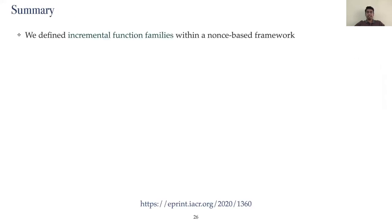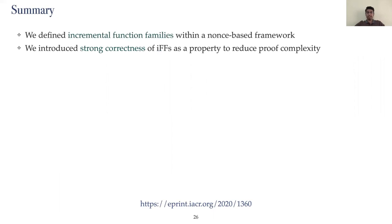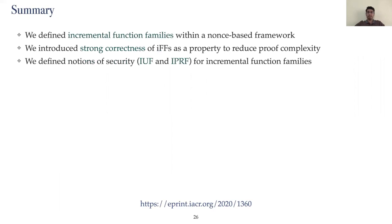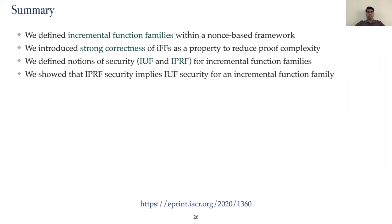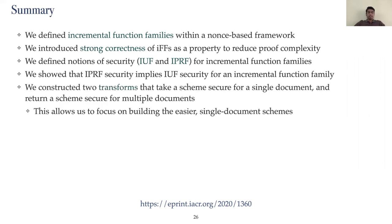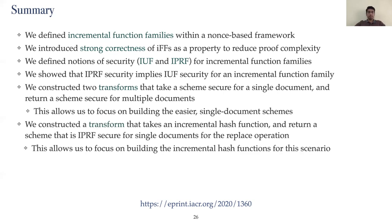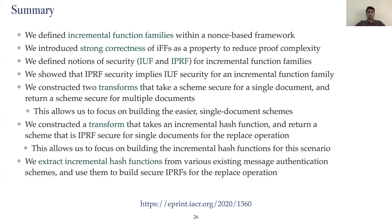To summarize: we define incremental function families within a nonce-based framework and introduce strong correctness as a property to reduce proof complexity. We define two notions of security — IPRF and IUF — for these incremental function families, and show that IPRF security implies IUF security. We construct two transforms going from single-document to multi-document security, and a transform that takes an incremental hash function and returns a scheme that is IPRF secure for single documents for the replace operation. We extract incremental hash functions from various existing message authentication schemes and use them to build secure IPRFs for the replace operation.